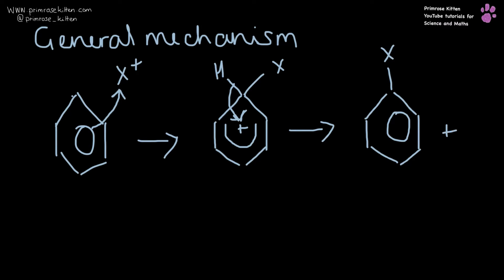And then what's going to happen is that electron is going to reform the delocalization. We're going to have our X added in and then the hydrogen ion is going to go off and probably reform the catalyst or do something else. So that's the general mechanism. I'm now going to talk you through two more specific examples, but you should be able to recognize the similarities, the patterns between the general mechanism and the specific examples.